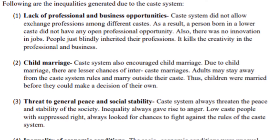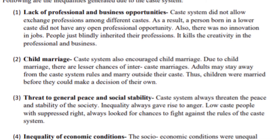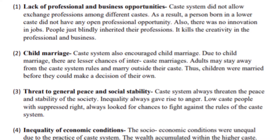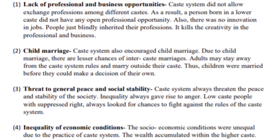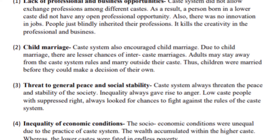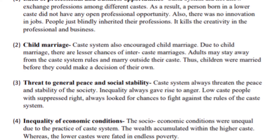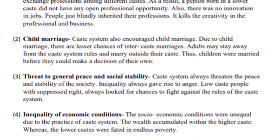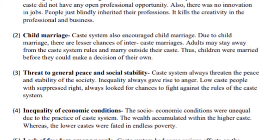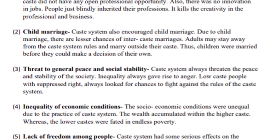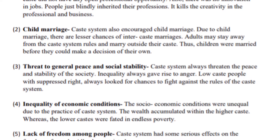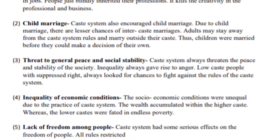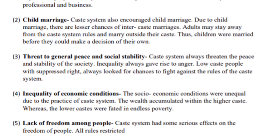Second, child marriage. Caste system also encouraged child marriage. Due to child marriage, there are lesser chances of inter-caste marriage, since adults may stay away from caste system rules and marry outside their caste. Thus, children were married before they could make a decision of their own. Third, threat to general peace and social stability. Caste system always threatened the peace and stability of the society. Inequality always gave rise to anger, and low caste people with suppressed rights always looked for chances to fight against the rules of the caste system.